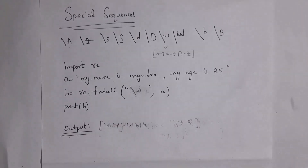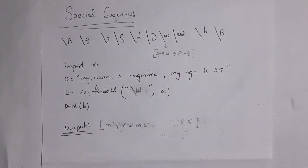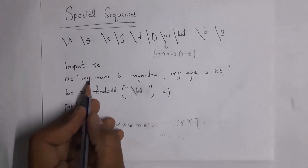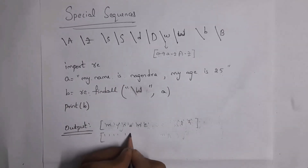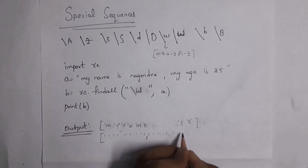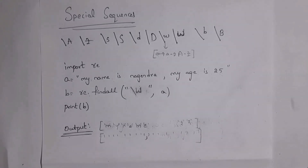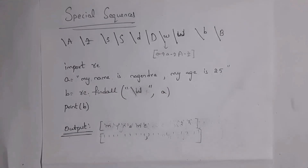Next I'll explain `\W` (backslash capital W), which is opposite to `\w`. Except characters from 0–9, capital A–Z, and small a–z, it prints the remaining characters. So when you write `re.findall('\W', a)`, you get only the spaces and the comma as output — four spaces, one comma, then another four spaces. `\w` prints alphanumeric characters; `\W` prints what remains (spaces and commas).